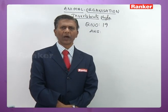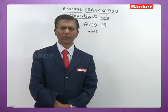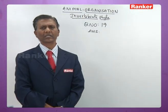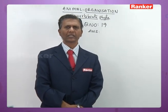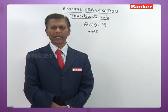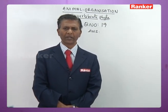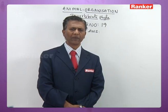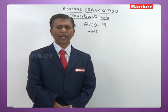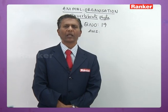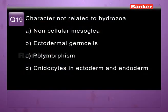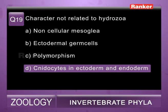Nineteenth question: the character not related to Hydrozoa — a) non-cellular mesoglea (correct, as in all hydrozoans mesoglea is non-cellular), b) ectodermal germ cells (correct), c) polymorphism (correct, hydrozoans exhibit polymorphism), d) nematocytes occur in ectoderm and endoderm (wrong — in Hydrozoa nematocytes are confined only to ectoderm). So nineteenth question correct answer is d.